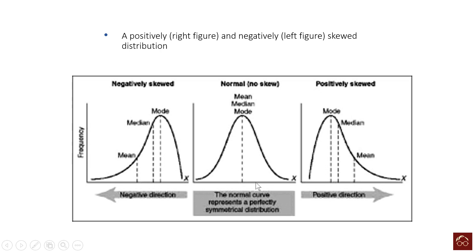Often it is not really possible to get such data in the real world. When we are collecting sample data, often you will see skewed data. It could be negatively skewed, where the mode is higher than the median and the median is higher than the mean. In a positively skewed data, the mode is lower than the median and the median is lower than the mean.